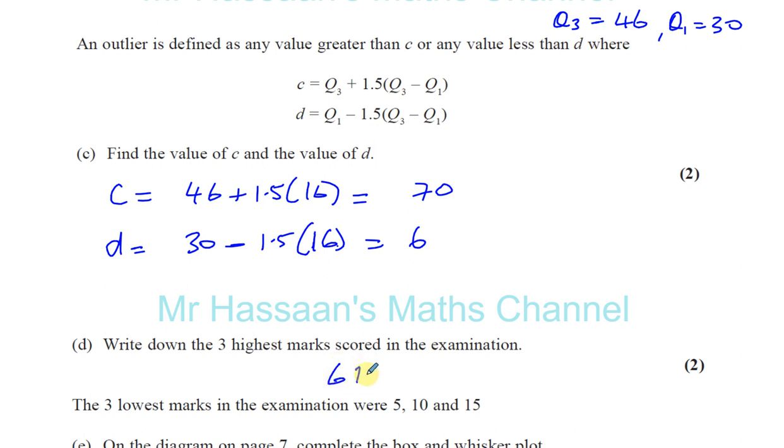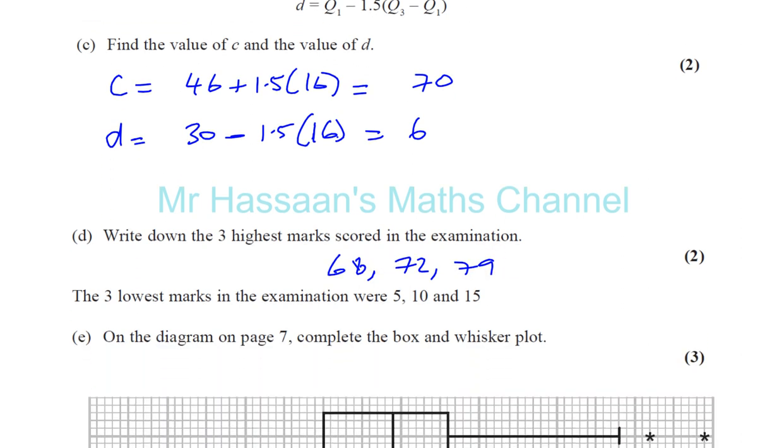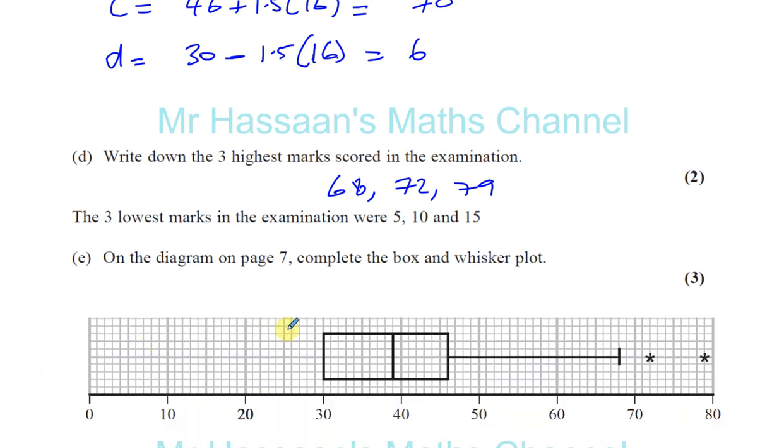Then it says the three lowest marks were 5, 10, and 15. On the diagram, which I've put here, complete the box and whisker plot. So remember that the limit for the lower number was 6. That's going to be the limit for the outliers in the lower section, 6.